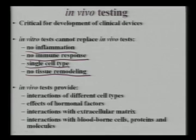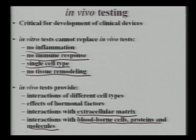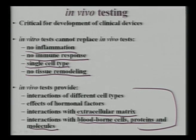In vivo tests provide interactions of different cell types, effects of hormonal factors, interactions with extracellular matrix, and interactions with blood, bone cells, proteins, and different biological molecules — making in vivo experiments much more meaningful but also more complicated. In summary, a positive in vitro test does not ensure a positive in vivo result, because in vivo involves additional parameters that significantly influence biological performance.